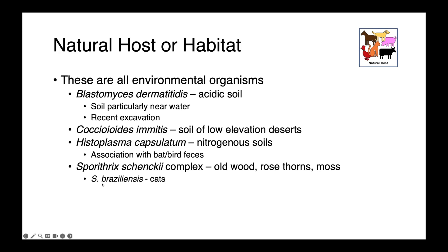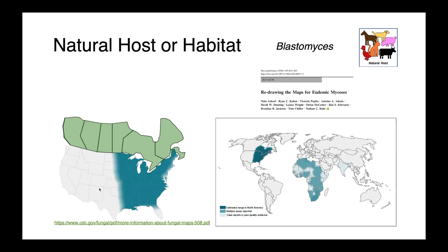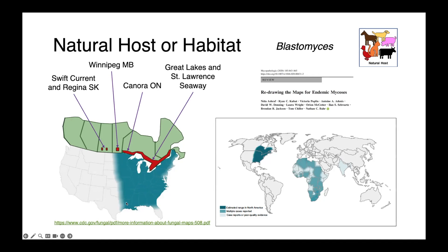One species within the schenckii complex, Sporothrix brasiliensis, is associated with cats. These organisms have recognized geographic distributions, and understanding where these fungi are found can be really helpful in developing differential diagnoses. Blastomyces dermatitidis hotspots in Canada include Swift Current and Regina in Saskatchewan, Winnipeg in Manitoba, Kenora in Ontario — one of the biggest hotspots in Canada — and the general Great Lakes and St. Lawrence Seaway region. Globally, we also find Blastomyces in Africa and South Asia.